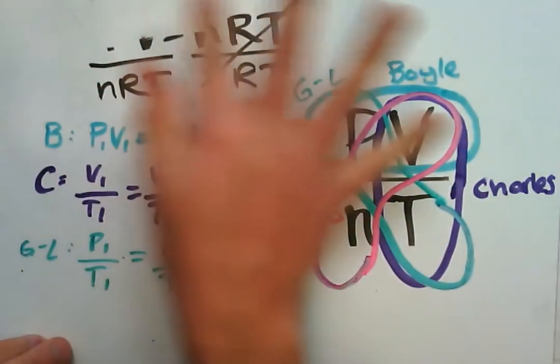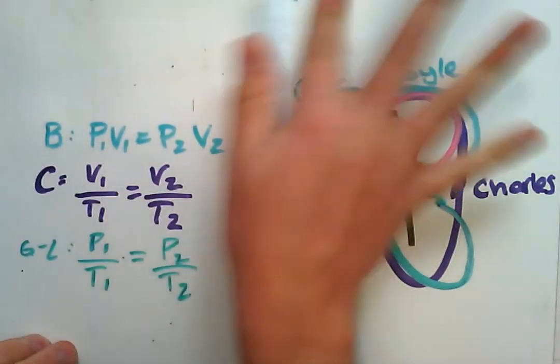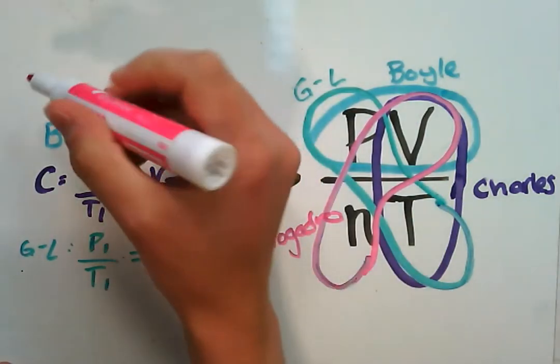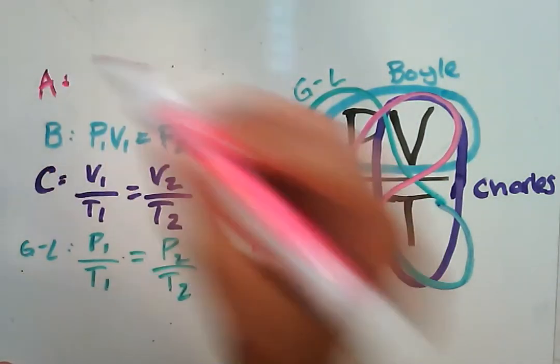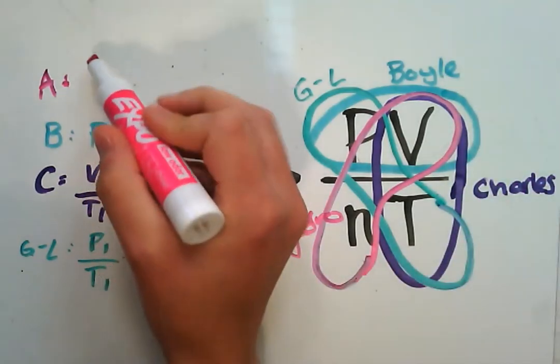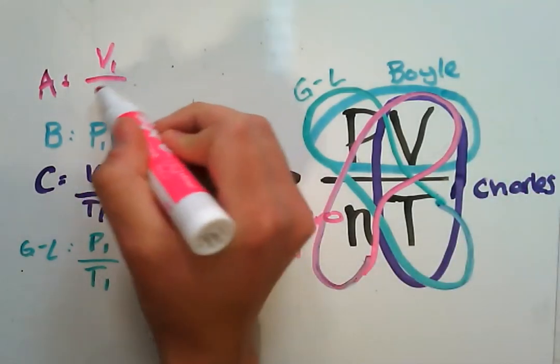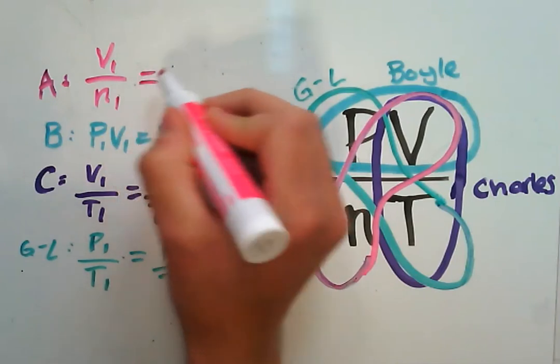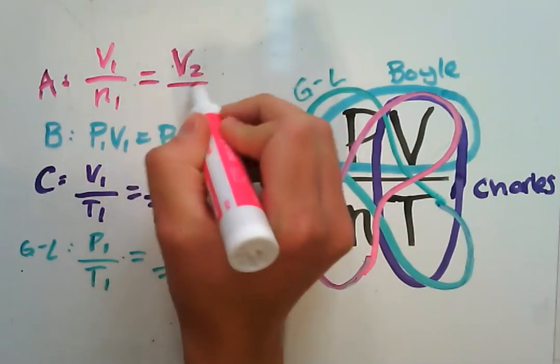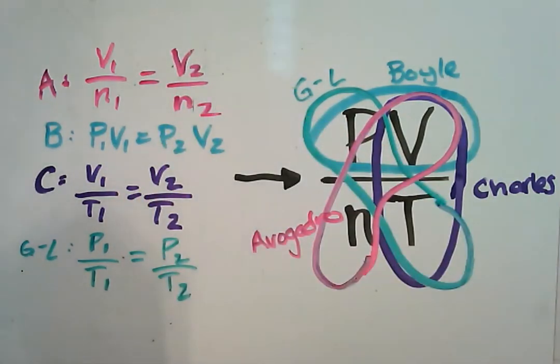And then last but not least, I'm actually going to do it at the top and erase this part so we have room. We have Avogadro's principle which says v over n, or volume v1 over the first number of moles equals v2 over n2.